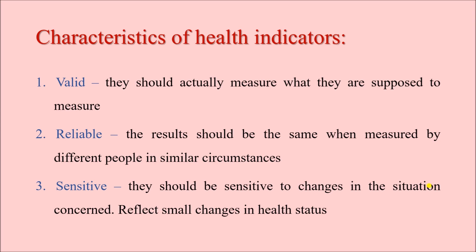Infant mortality rate is the valid tool for assessing infant mortality in a given population. Next is reliability: an indicator is reliable when we get similar results when measured by different people in the same circumstance. If I use a particular indicator in a given population and another investigator uses the same indicator in the same population, they should get results very similar to mine. No matter how many people use the same indicator in the same circumstance, all should get very similar results.